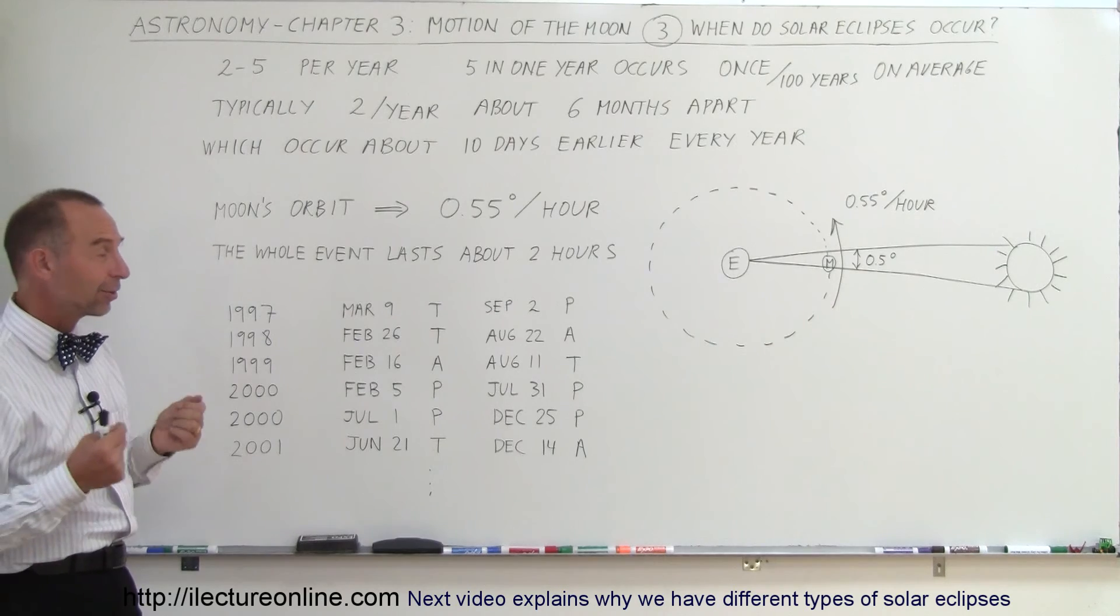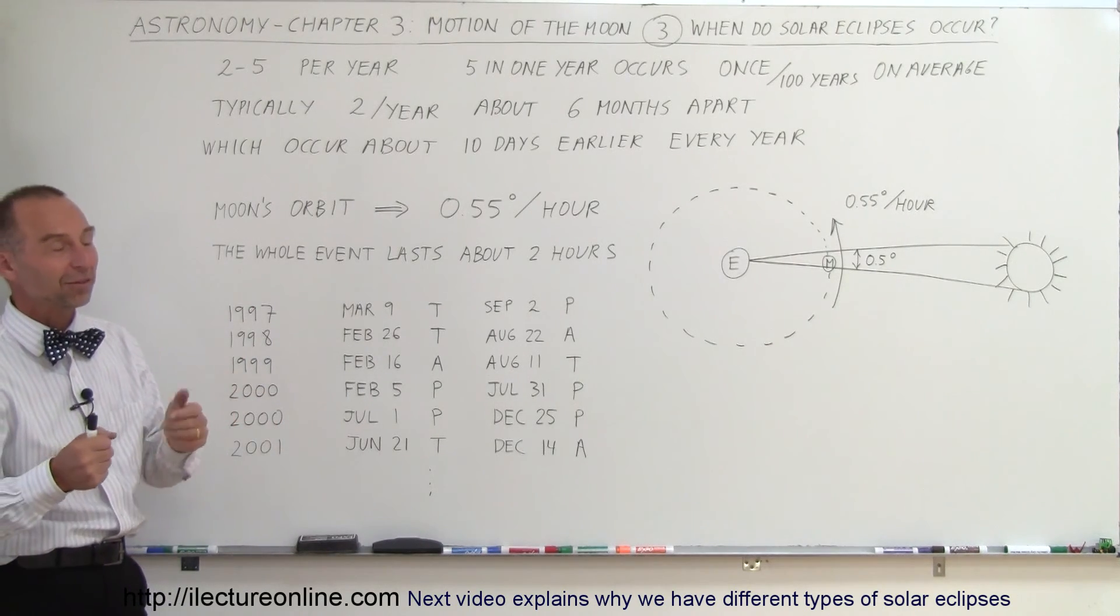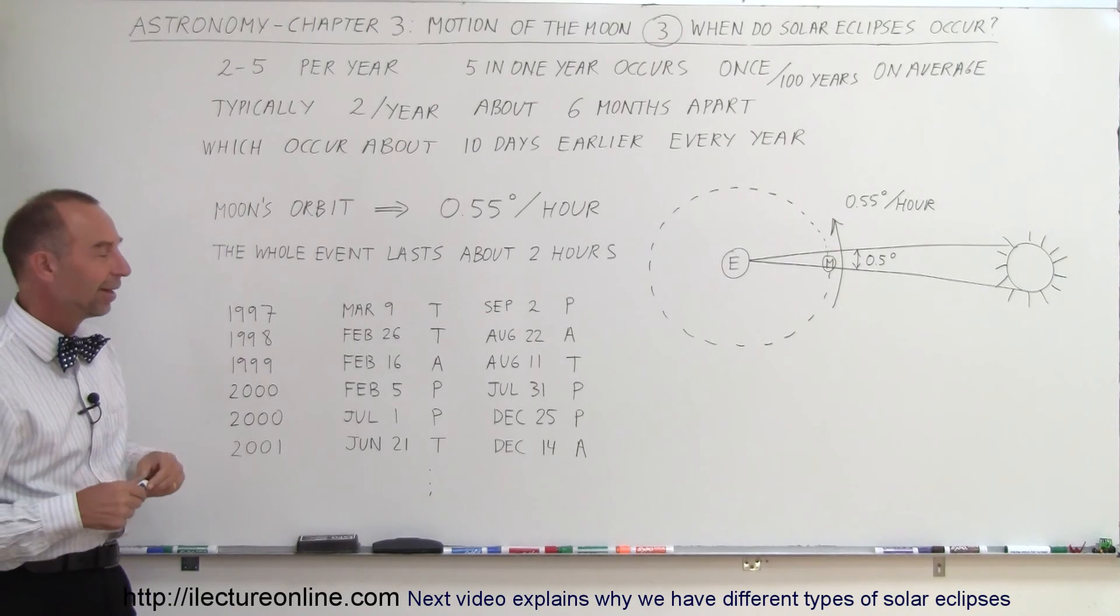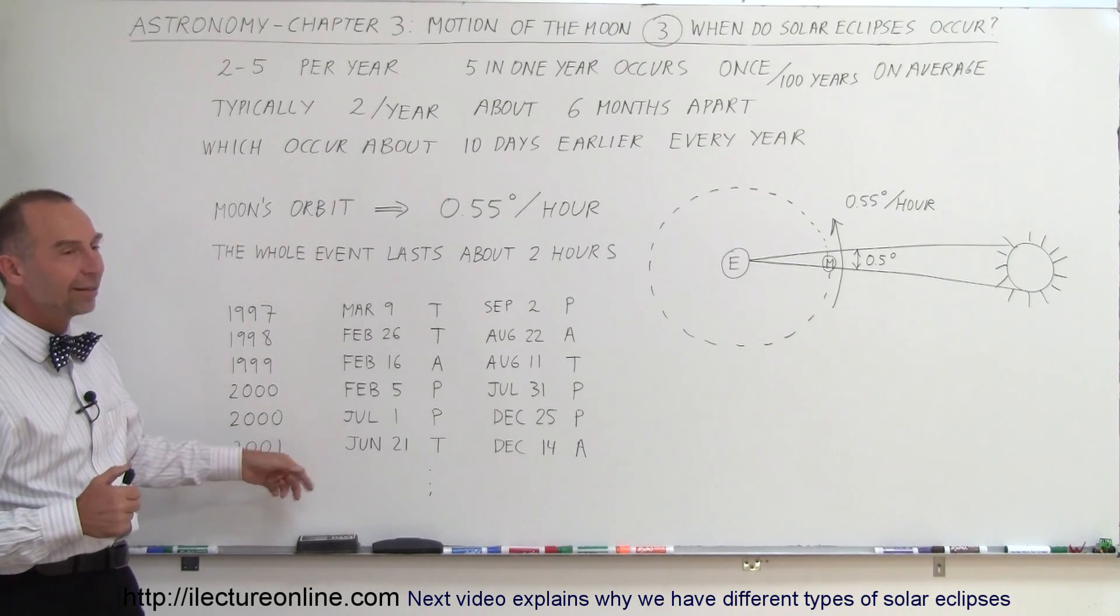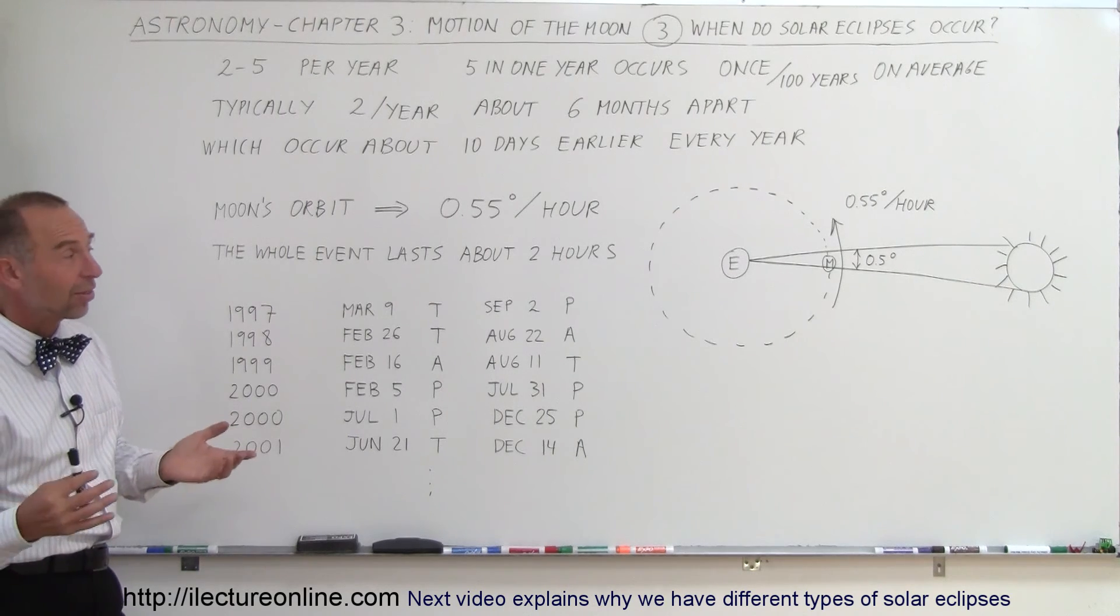So if you want to know when the next one is, either you can write down the pattern, or you can simply look it up in a book and say, when is the next solar eclipse? And if we just had one, then you know the next one will probably happen in about six months later.